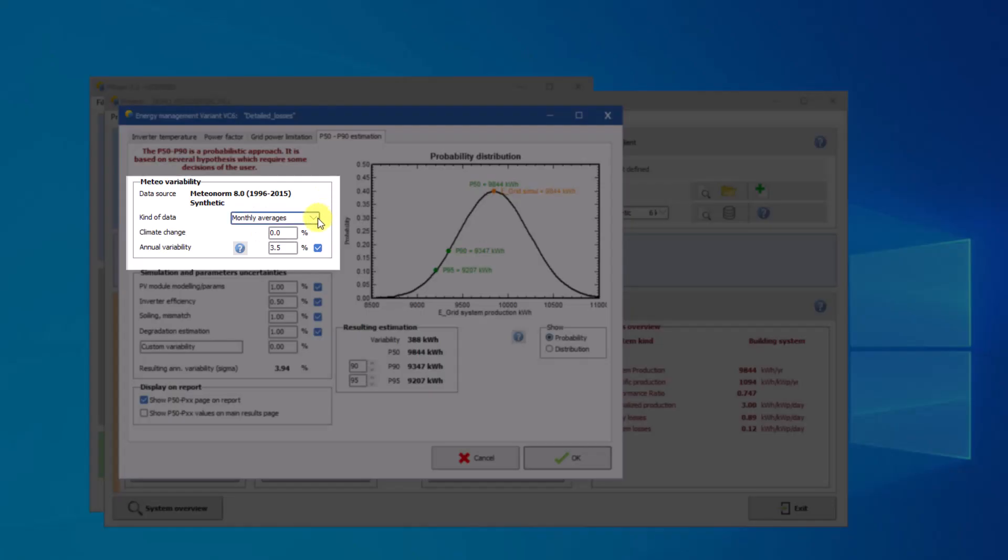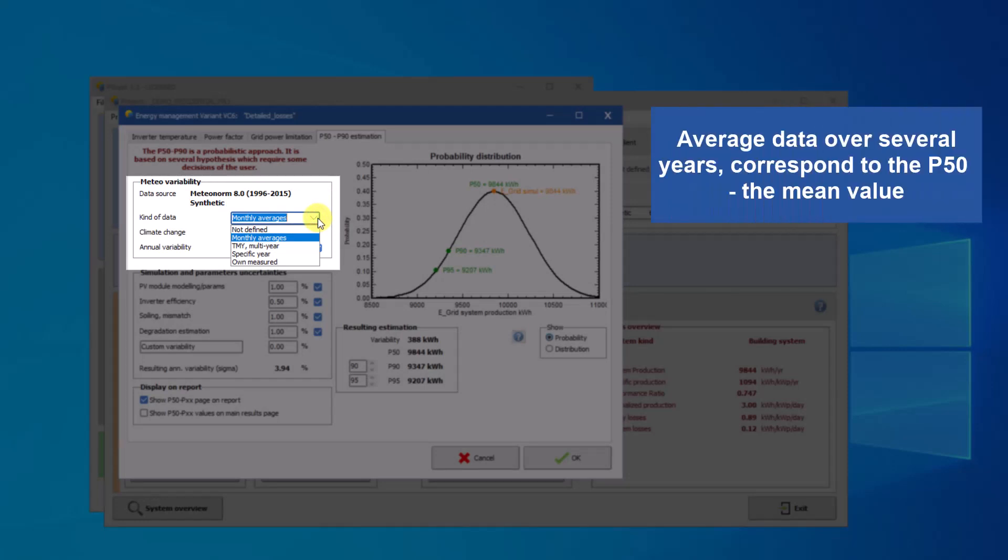First choose the kind of data. If the data are representative of an average over several years, like monthly averages or TMY, the result should be considered as an average and correspond to the P50, mean value of the Gaussian.